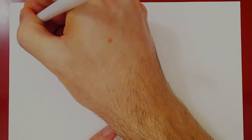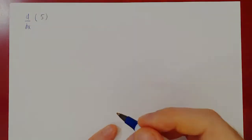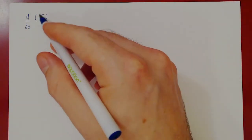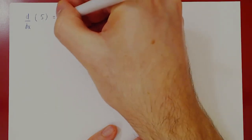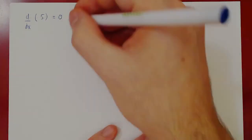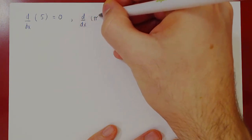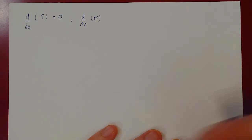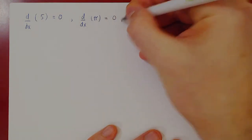Examples: what's the derivative with respect to x of 5? Well, y equals 5 is a horizontal line, the slope is zero, the derivative is the slope, so the derivative of 5 is zero. What's the derivative of π? Same thing — π is a constant, the slope of a constant function is zero, hence the derivative is zero.